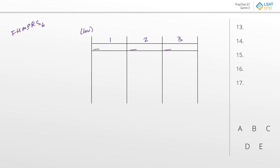The first rule says that R has to be either with F or M. So we can say either we're going to have an RF block or we're going to have an RM block.